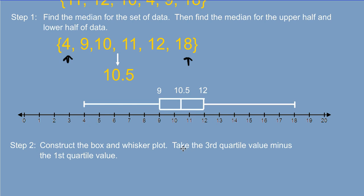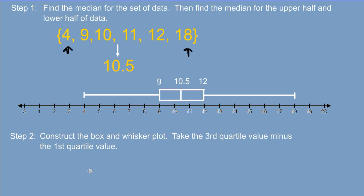In order to find the interquartile range, we take the third quartile value minus the first quartile value. So we have the third quartile value right here minus the first quartile, and we get 12 minus 9 equals 3. That is your interquartile range. And it just gives us a better understanding of how the data is kind of spread out around the median, in this case.